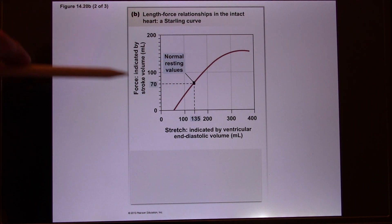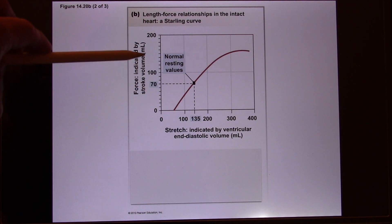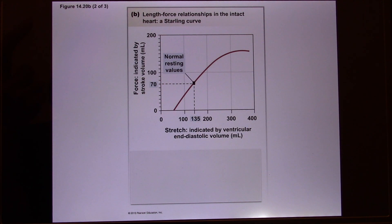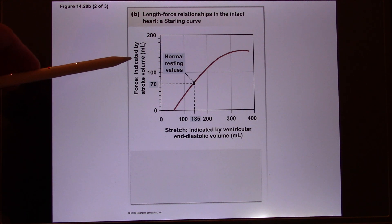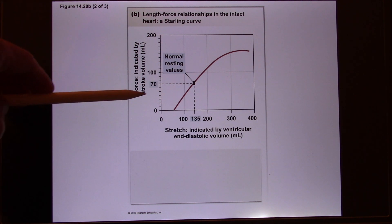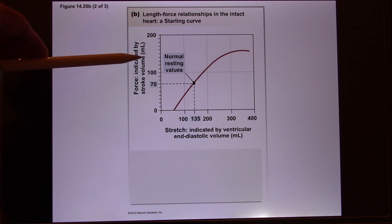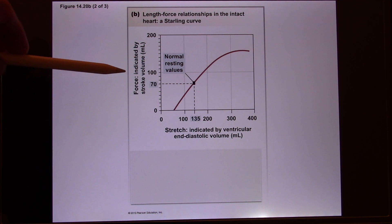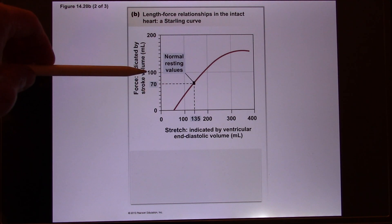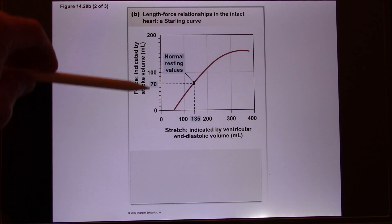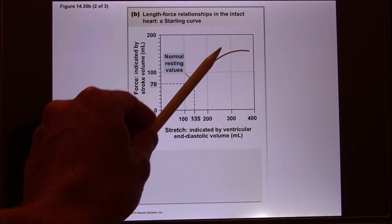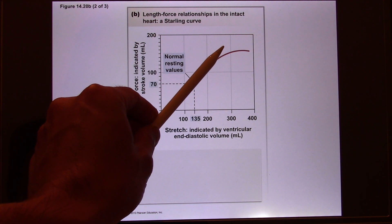Why do they use mL for contracting force? They use stroke volume to represent contracting force, because in a real situation — especially when the heart is working — there's no way to measure the contracting force of the heart directly. They use how much volume is sent out to the aorta from the left ventricle. When contracting force increases, stroke volume increases. That's why the y-axis is still a volume, but it actually represents contracting force.